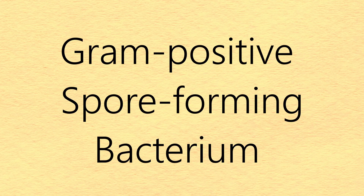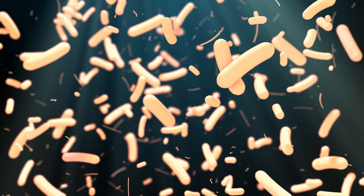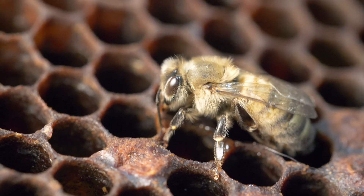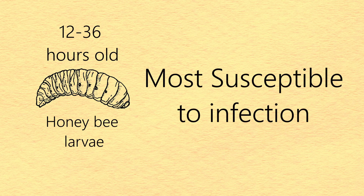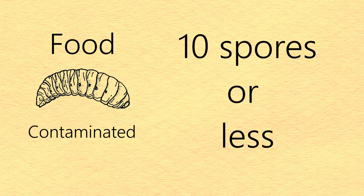The causative agent of American Foulbrood is the gram-positive spore-forming bacterium Paenibacillus larvae. The endospores of this bacteria are the only infectious form of this organism and can only infect larvae — adults don't become infected. Larvae from 12 to 36 hours old are most susceptible to infection. If their food is contaminated with about 10 spores or less, that's enough to initiate a fatal infection.